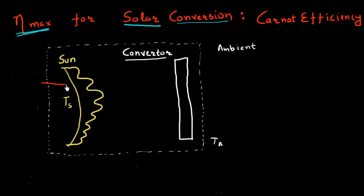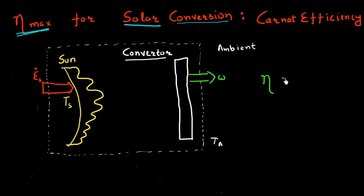Let me start by drawing this red arrow, which represents the energy flux coming from the sun, represented by the symbol E_S. What I'm interested in is finding out how much of this energy I can convert into a useful form of work, denoted in green. My efficiency η is essentially this work divided by the energy flux coming from the sun.